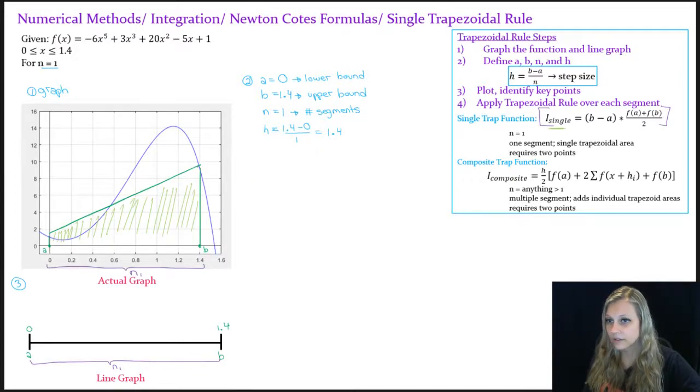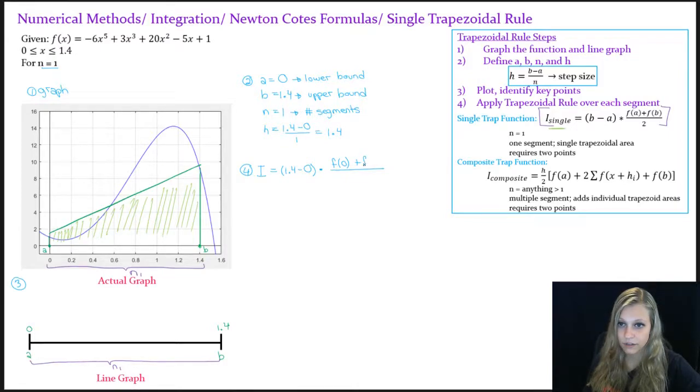So labeling everything with step three, and then step four is actually performing the iteration. So we have our upper bound minus our lower bound. So we have 1.4 minus zero times the quantity of the function evaluated at our lower bound, or zero, plus the function evaluated at our upper bound, which will be 1.4, all divided by two. And when I calculate all of these values, I get that my estimate is 7.11379.